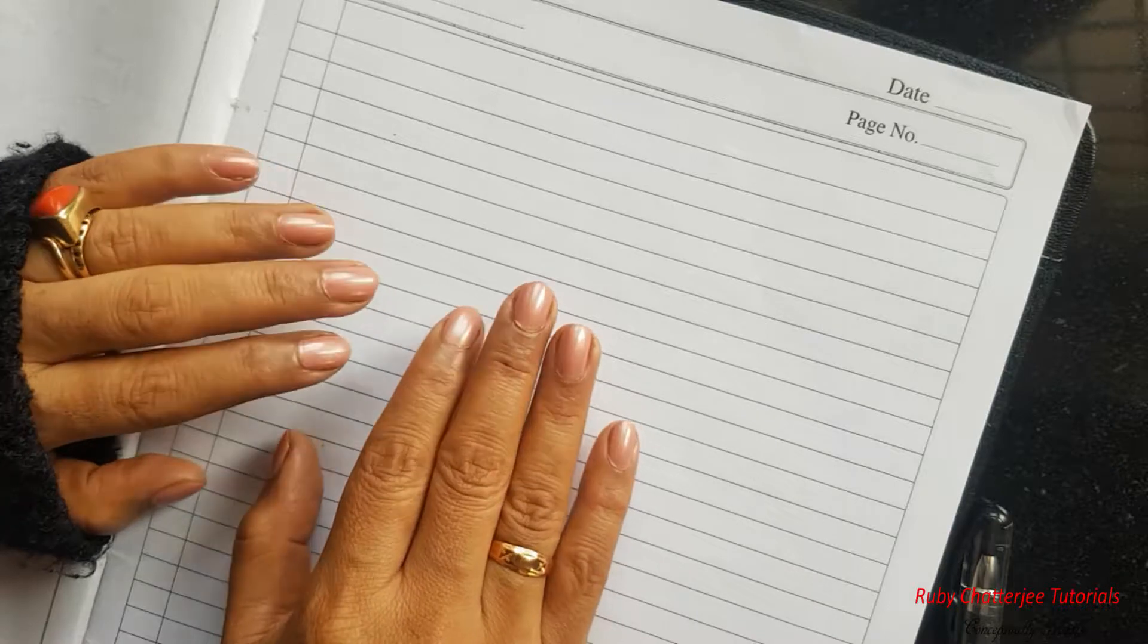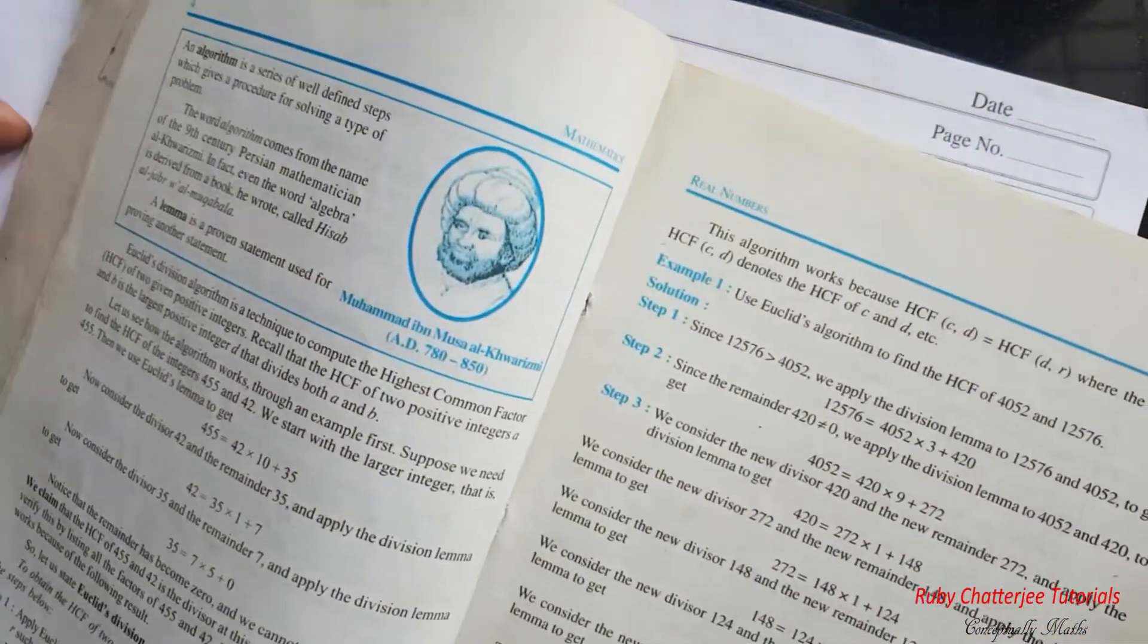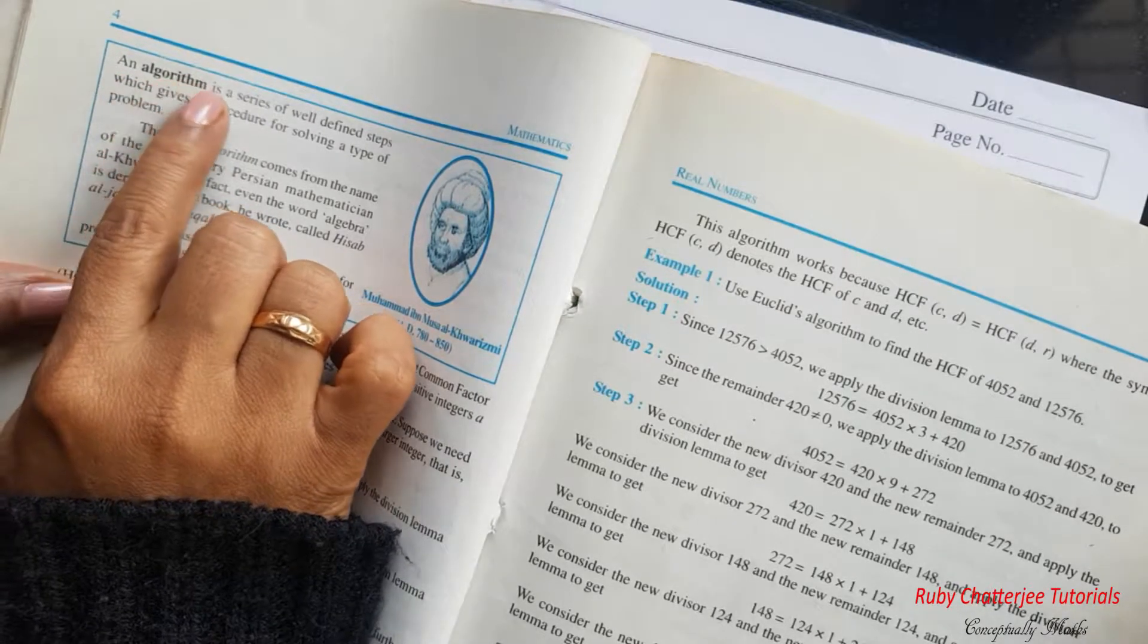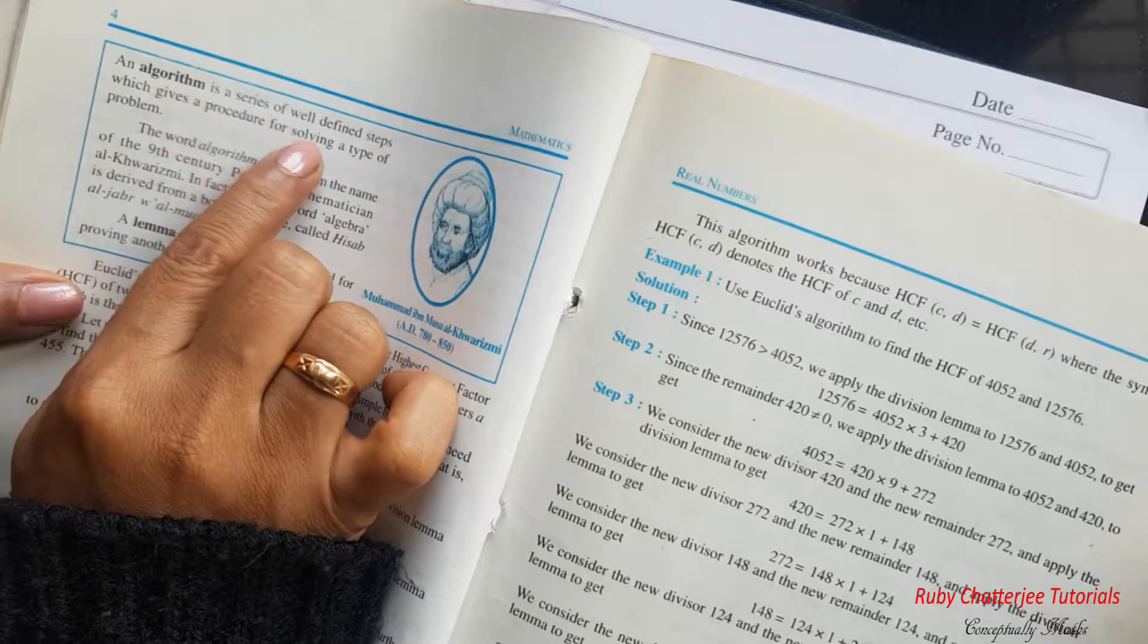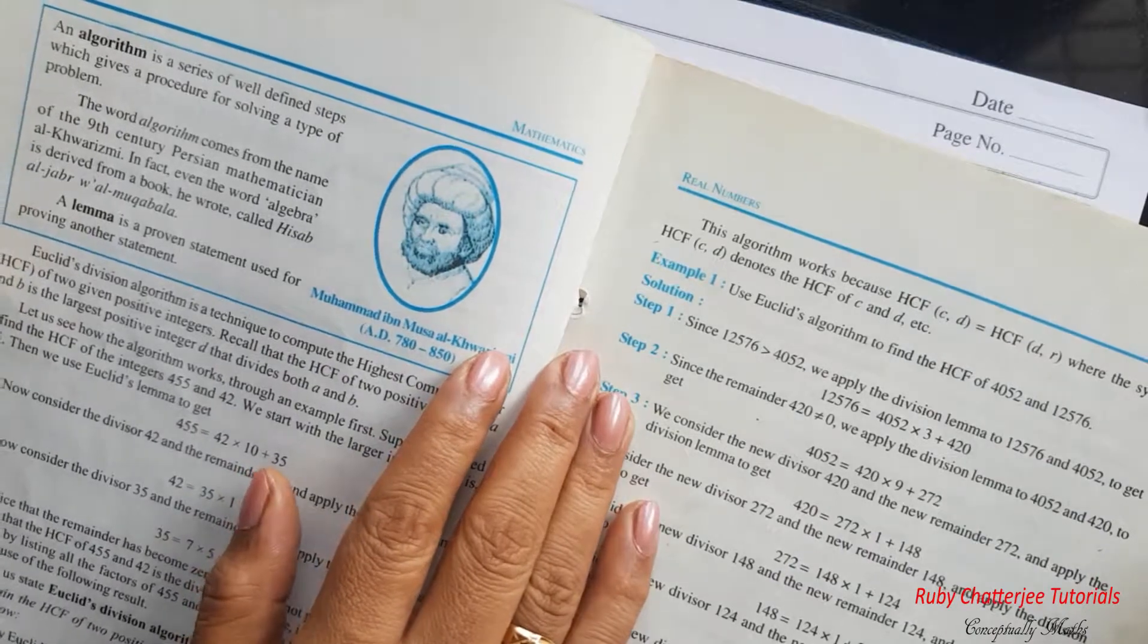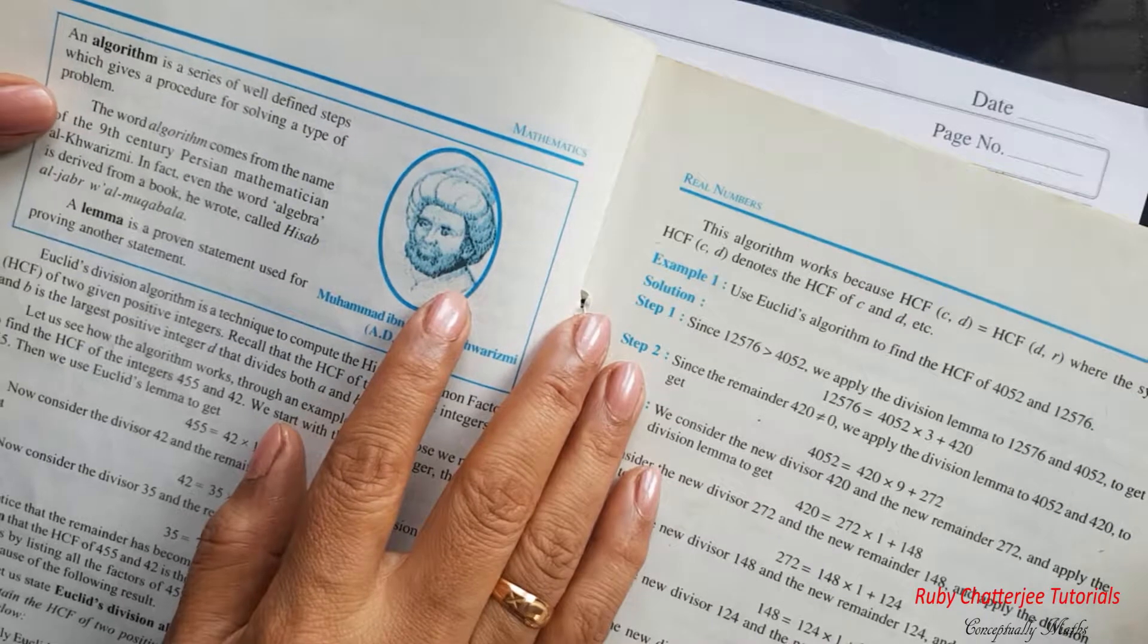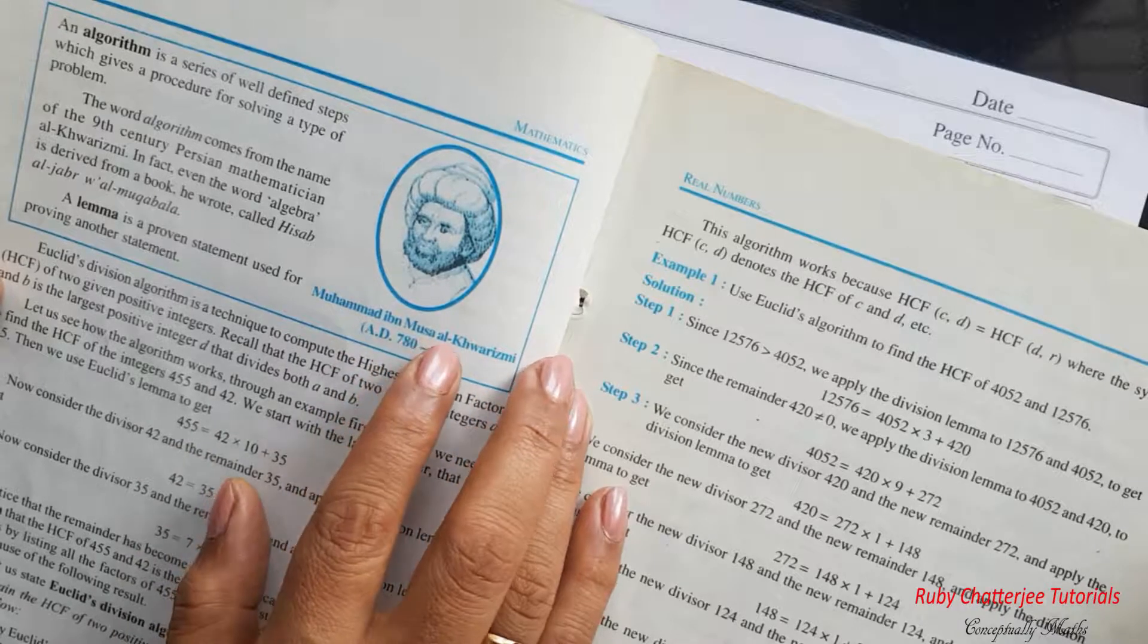Now to understand algorithm let us turn to page number four of the textbook. On this page it says an algorithm is a series of well-defined steps which gives us a procedure for solving a type of problem. And just to the right of this written text you have a picture of one of the 9th century AD famous Persian mathematician, astronomer, geographer by the name of Muhammad bin Musa al-Khwarizmi.